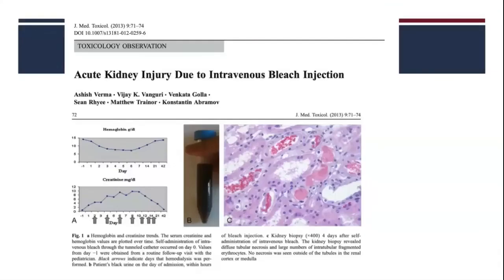Bleach can also cause systemic toxicity. Intravenous bleach injection can lead to acute kidney injury, as shown by darkened urine due to hemoglobin, and pathological specimens demonstrating the acute kidney injury.